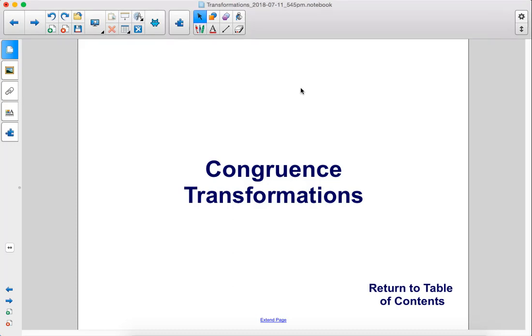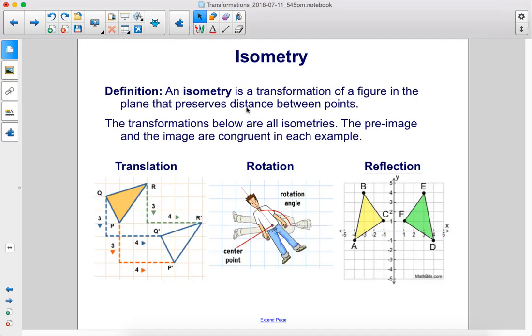Congruence transformations. An isometry is a transformation of a figure in the plane that preserves distance between points. The transformations below are all isometries. The preimage and the image are congruent in each example.